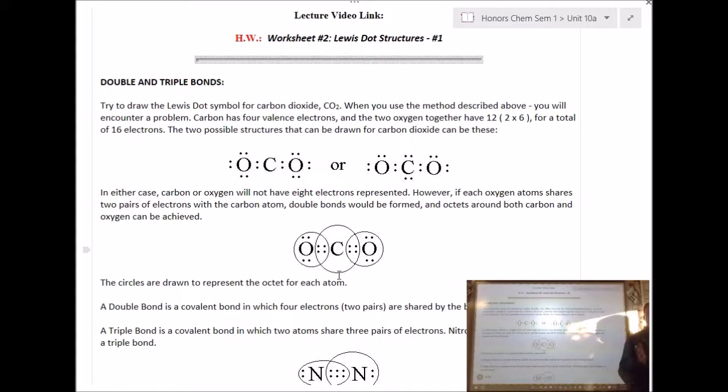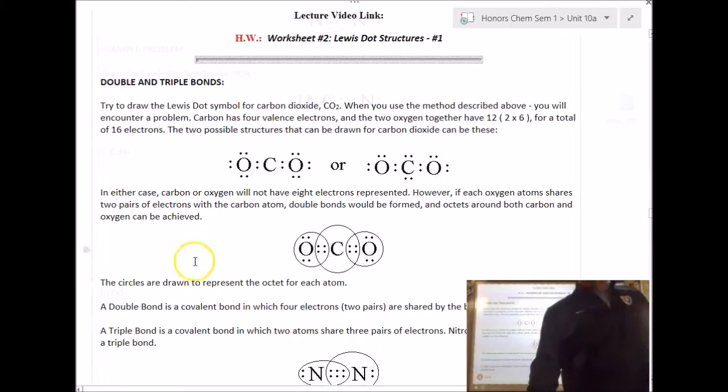Now, yesterday, with the homework, all the structures had single bonds. A single bond is one pair of shared electrons. When we talk about double bonds and triple bonds, a double bond is two shared pairs, and a triple bond is three shared pairs. We cannot go above a triple bond. We haven't talked about the mechanics of sigma and pi bonds. We'll do that in AP. But just know that you can't have anything greater than a triple bond. Wasn't that a great lecture? Let's do some examples.